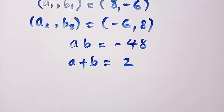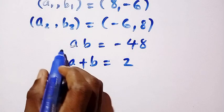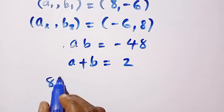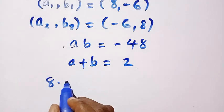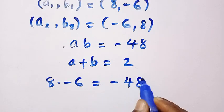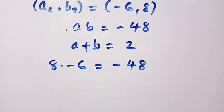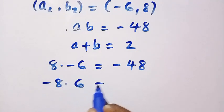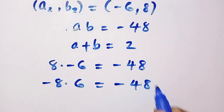So by substituting the first one in this equation we have - a is 8, multiply by b is minus 6, so this gives us minus 48, that is correct. And also we have minus 6 comma 8 as well, so this gives us minus 48.